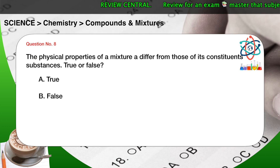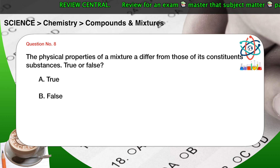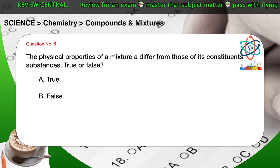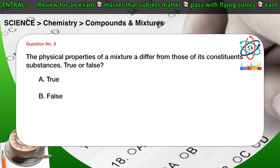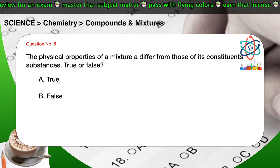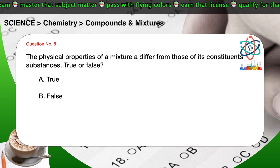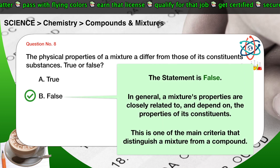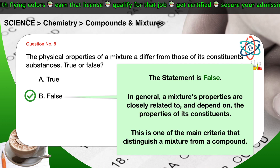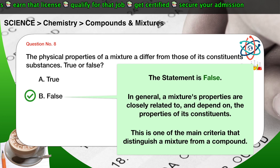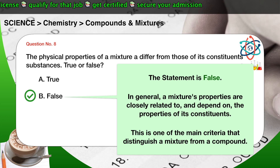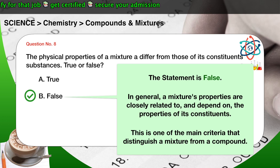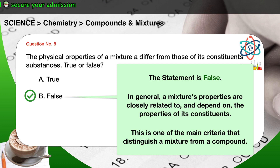Question number 8. The physical properties of a mixture differ from those of its constituent substances. True or false? A. True. B. False. The correct answer is B. The statement is false. In general, a mixture's properties are closely related to, and depend on, the properties of its constituents. This is one of the main criteria that distinguish a mixture from a compound.